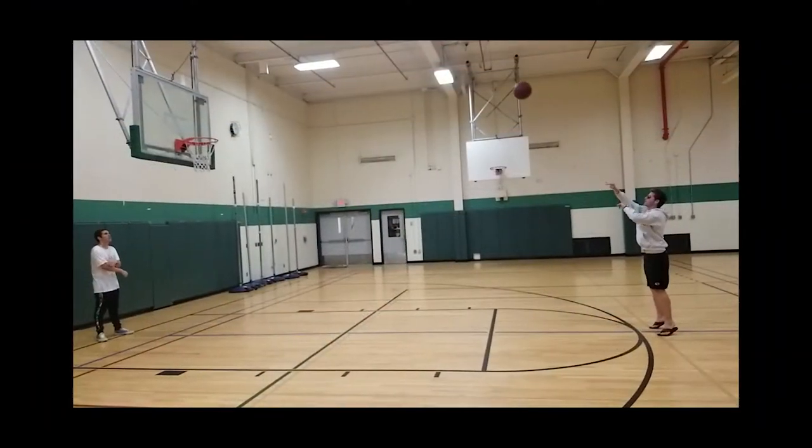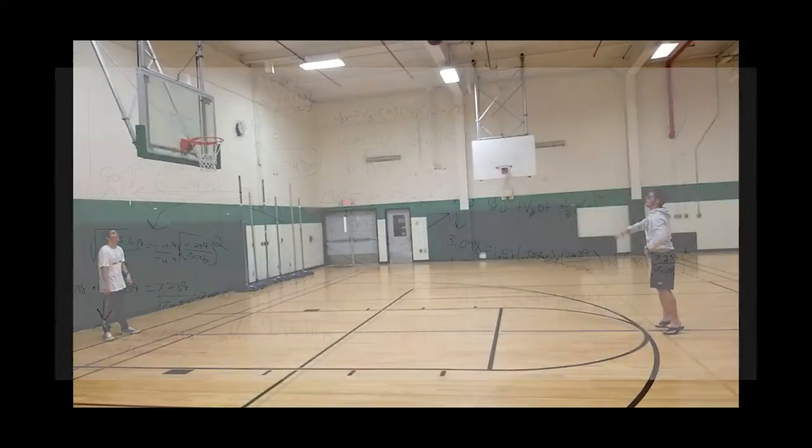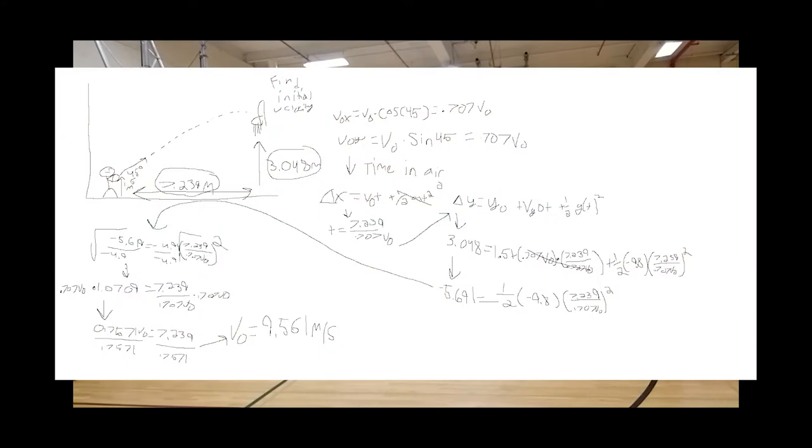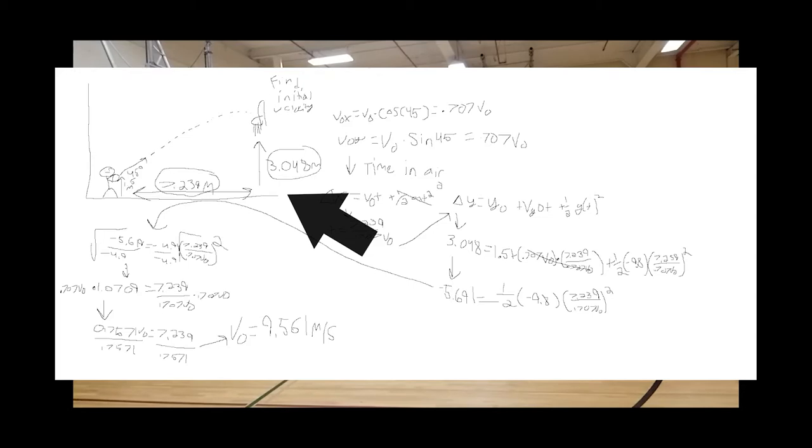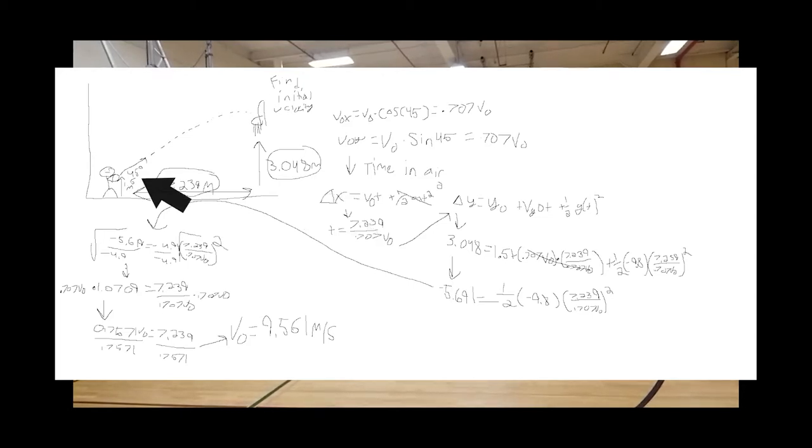Through experimentation, they found that the distance from the three-point line to the basket was 23.75 feet, or in normal terms, 7.239 meters. They also found the height of the basketball hoop to be 3.048 meters above the ground, and the height of the basketball in the person's hand to be 1.5 meters above the ground. They decided to keep consistent throughout each shot. They would throw the ball at a 45-degree angle, giving the ball enough loft to make it to the basket with relative ease.